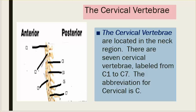The cervical vertebrae are located in the neck region. There are seven cervical vertebrae, labeled from C1 to C7. The abbreviation for cervical is C.